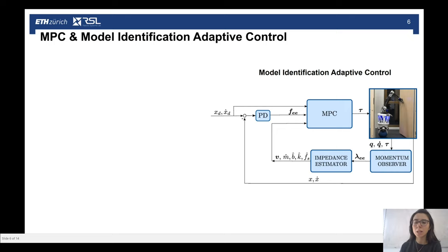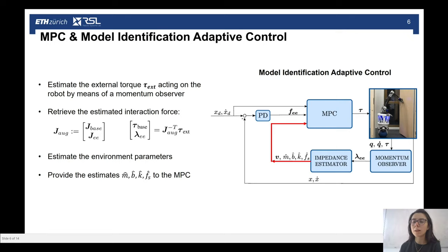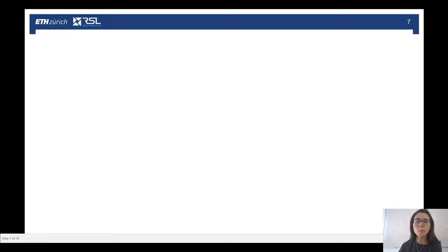Within the interaction control formulation, we have implemented a model identification adaptive control scheme, which is based on the following procedure. We estimate the external torque acting on the robot by means of a momentum observer. This takes as input the generalized positions, velocities, and torque of the robot, and outputs the external torque in the generalized coordinates. From the external torque in the generalized coordinates, we can retrieve the estimated interaction force by using an augmented Jacobian, which contains the Jacobian of the base and the Jacobian of the end-effector. Afterwards, we estimate the environment parameters by means of an impedance estimator. This is basically a common filter which takes as input the interaction force and outputs the mass, damping, spring stiffness, and static force parameters. Finally, we can provide this estimate to the MPC model, which becomes thus aware of the evolution of the environment model at the next iteration.